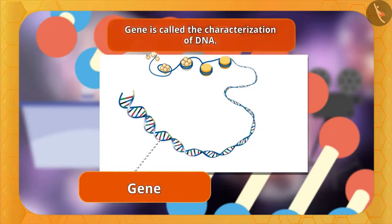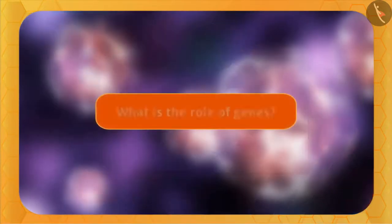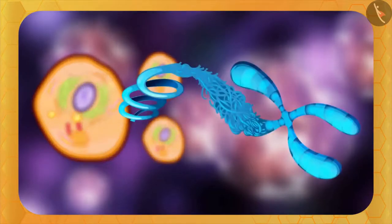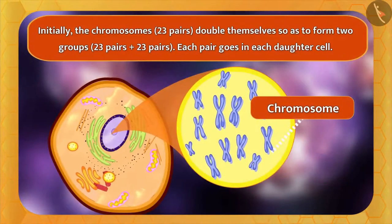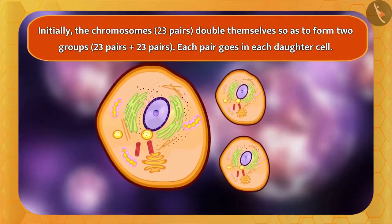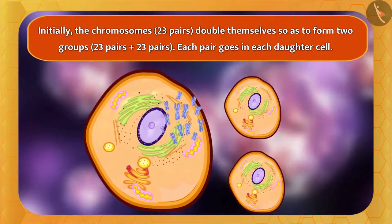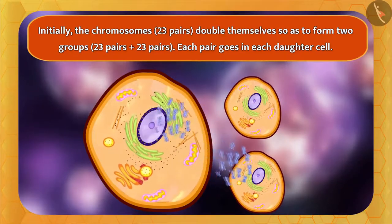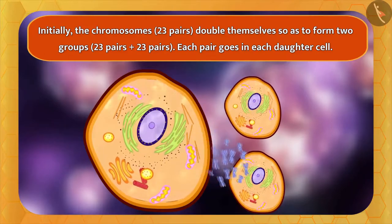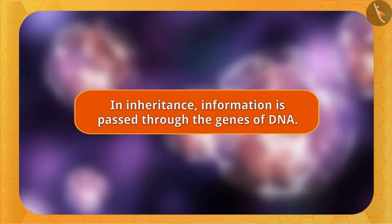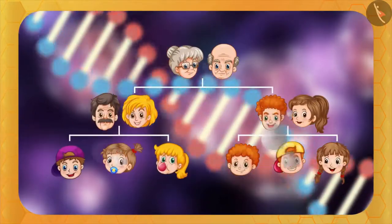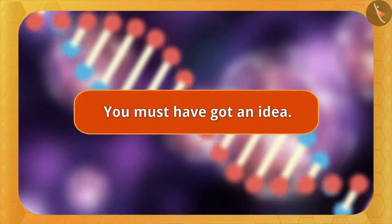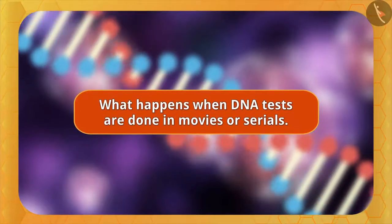Gene is called the characterization of DNA. When a cell divides, the chromatin gets organized into a structure called chromosome. You can see a lot of chromosomes in the nucleus of the cell, which means the cell is about to divide. When the cell divides, some part of the chromosome migrates to the new cell. In this way, through the genes of DNA, instructions go into the new cell. So in inheritance, information is passed through the genes of DNA. Similarly, in children, information or instructions come through the genes of DNA of parents — which is exactly what happens in DNA tests in movies or serials.